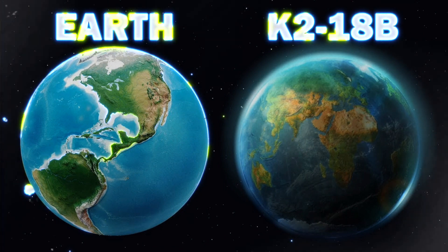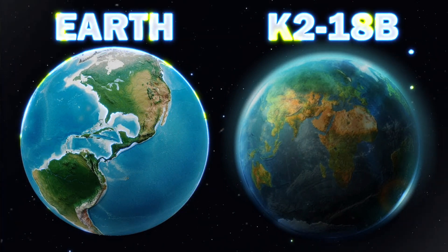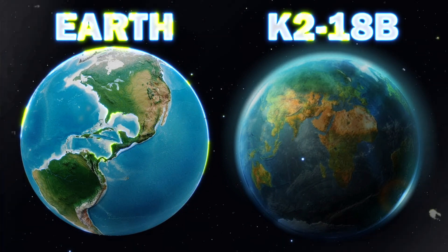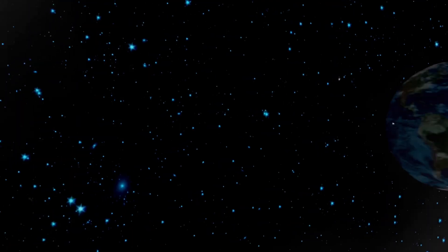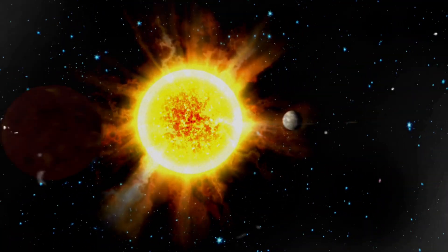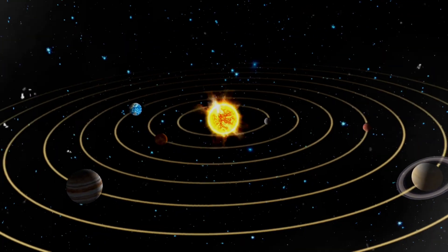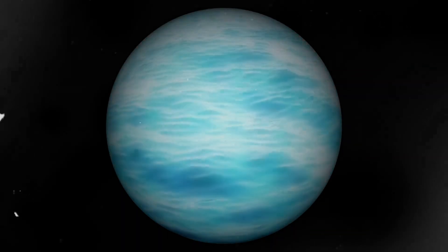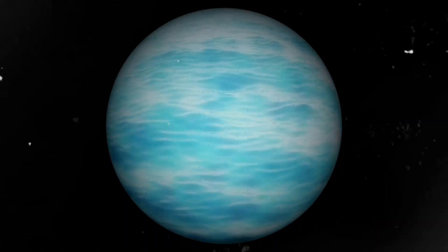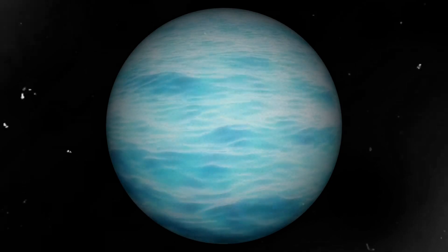Before delving into why K-218b has sparked excitement among astronomers, let's consider the essential factors supporting the theory of life on an exoplanet. For a planet to potentially harbor life, its orbit must fall within the habitable zone, indicating the planet's surface must maintain an optimal temperature for liquid water to exist, an essential requirement for the survival of lifeforms on Earth.